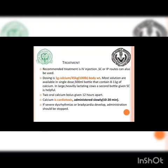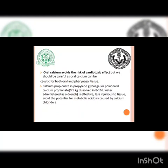Calcium is cardiotoxic; therefore, administration should be very slow. If severe dysarrhythmia or bradycardia develops, administration should be stopped immediately. Oral calcium avoids the risk of cardiotoxic effects, but care should be taken as oral calcium can be caustic to oral and pharyngeal tissues. Calcium propionate in propylene glycol gel or powdered calcium propionate is effective and less injurious to tissues, avoiding the potential for metabolic acidosis caused by calcium chloride. Oral administration of 500 grams of calcium results in approximately 4 grams being absorbed into circulation — that is its bioavailability.